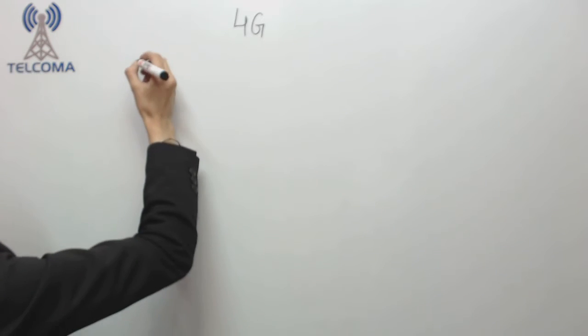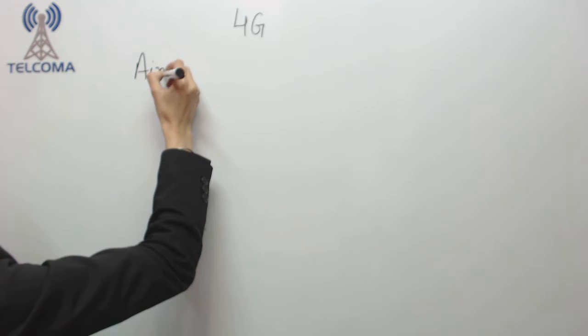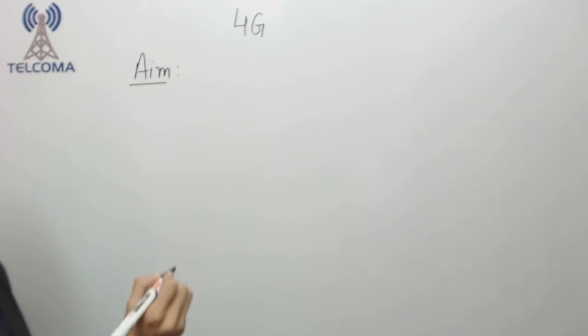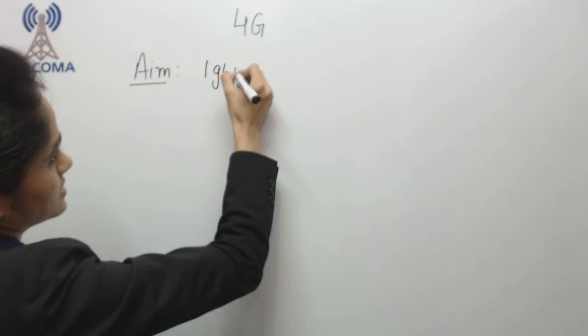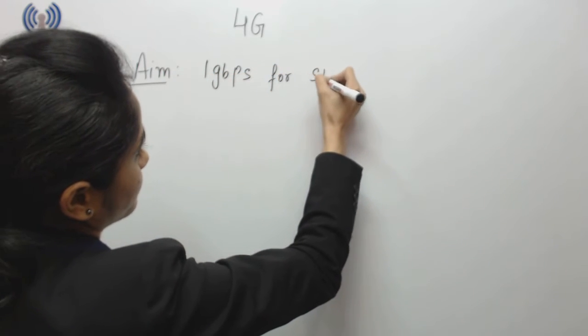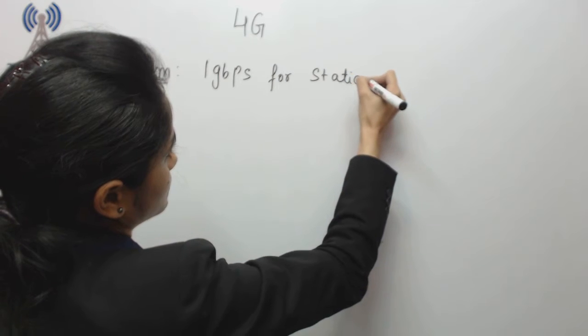Hello, today in this class we are going to discuss about 4th generation, so 4G. Let's talk about the aim. 4G has an aim that 4G will provide 1 gigabit per second for stationary users.